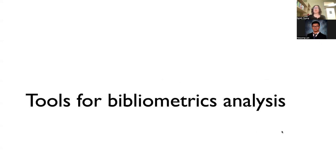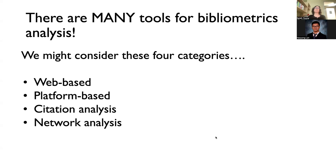Now let's talk about tools. We've discussed the analysis types, the data you need, and the formats required. Let's talk about what tools you might actually use once you've assembled your dataset and you're moving into your analysis phase. There are many tools out there for bibliometrics analysis, and depending on what you're doing and how much customization you need, that will inform the tools you decide to use. I've grouped these into four categories: web-based tools, platform-based tools, tools for citation analysis, and tools for network analysis.